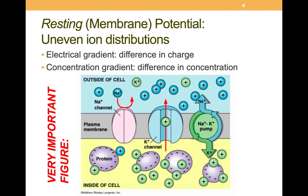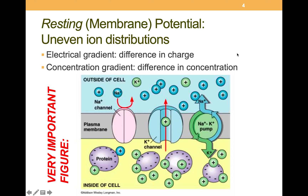Due to the selective membrane permeability at rest, we have two gradients across the membrane. The electrical gradient, or electrostatic gradient, is the difference in charge across a membrane — think of it as like charges repel, opposites attract, like magnets. And the concentration gradient, which is a chemical gradient, is the difference in solute concentrations across a membrane, causing flow from high to low concentration. Think of dropping a spoonful of sugar or ink in water — it dissolves and goes from areas of high to low concentration, evening itself out.